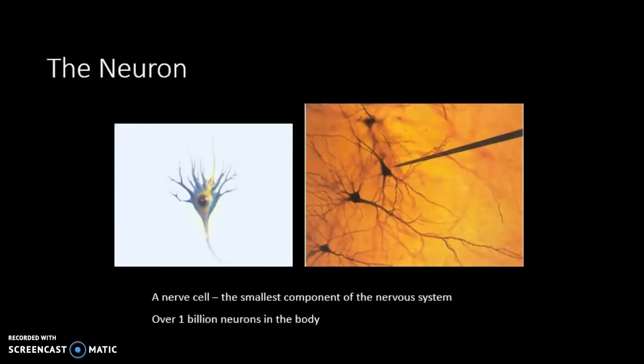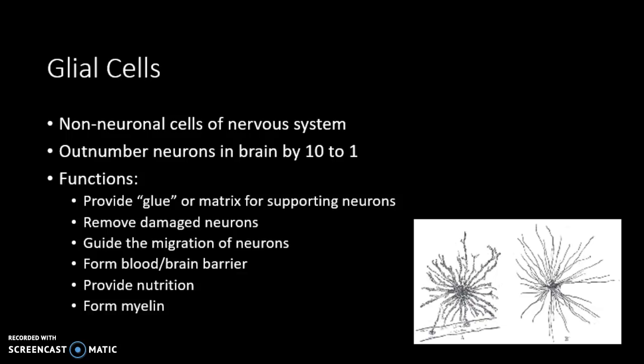The neuron is a nerve cell — it's the smallest component of the nervous system. We have over a billion neurons within our body that communicate with one another. Then we have glial cells, which are supportive cells in the central nervous system. They are not neurons, do not conduct electrical impulses, and are the most abundant cell type in the CNS.